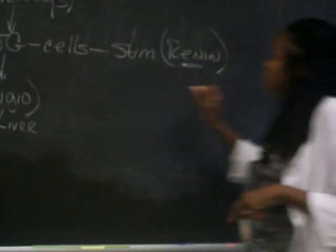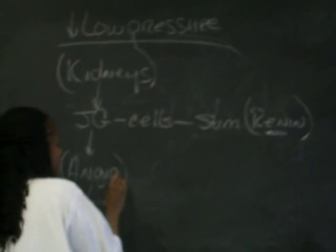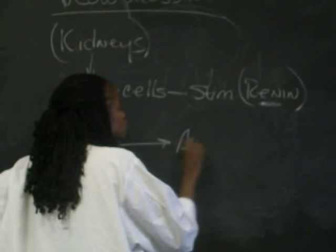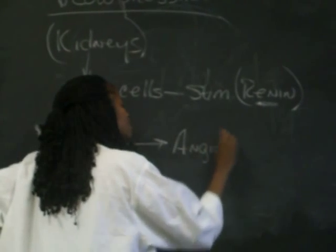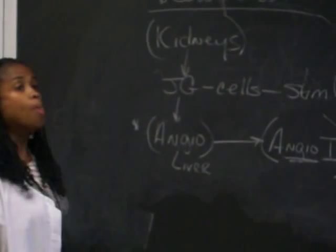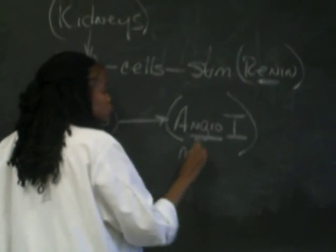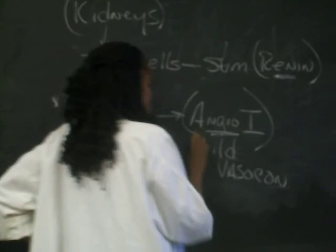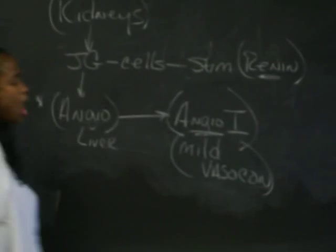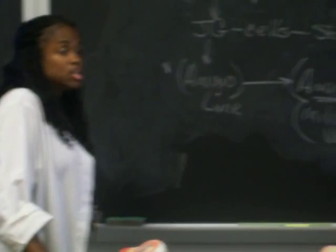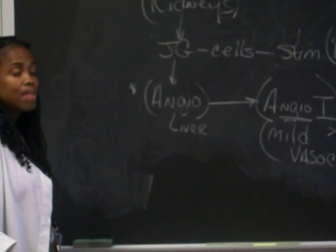And renin likes this stuff because renin said, I can act on the angiotensinogen and I can convert it to angiotensin 1. Now, who remembers what the effect of angiotensin 1 is? Vasoconstriction. A mild vasoconstrictor. Make sure you say mild. A mild vasoconstrictor. And it's very mild. It's not strong at all. So you get slight vasoconstriction.